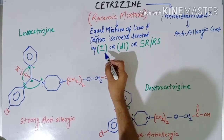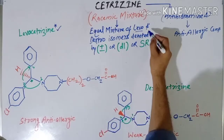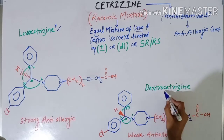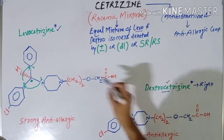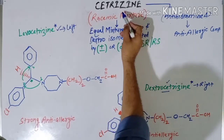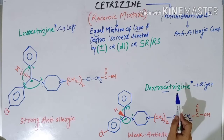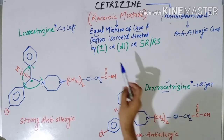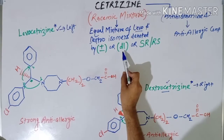The levo isomer of cetirizine is known as levocetirizine, and the dextro isomer of cetirizine is known as dextrocetirizine. Dextrocetirizine rotates the plane of polarized light towards the right direction, and levocetirizine rotates it towards the left direction. Cetirizine, the tablet consumed daily by so many people, is actually a mixture of levocetirizine and dextrocetirizine, chemically denoted by the symbols ±, d, l, SR, and RS.